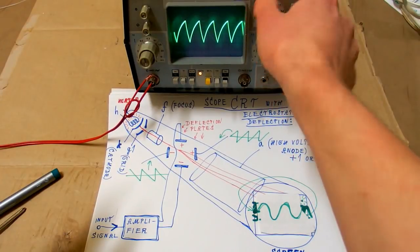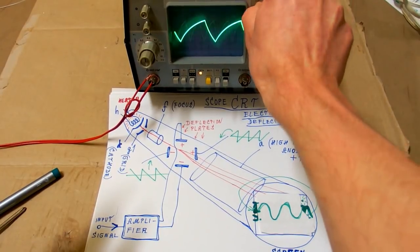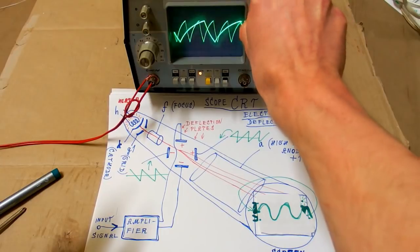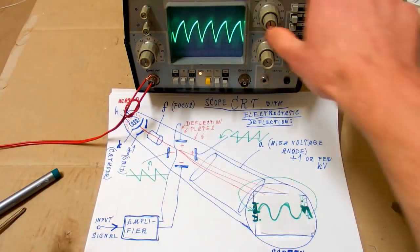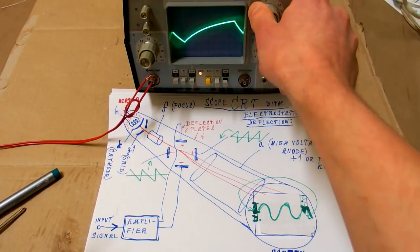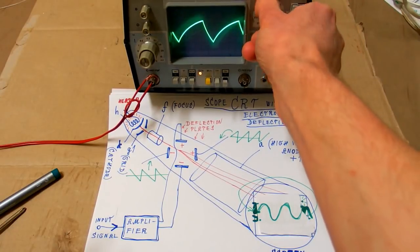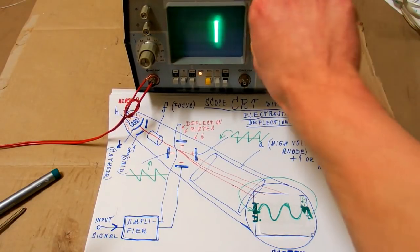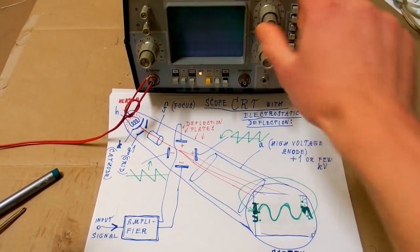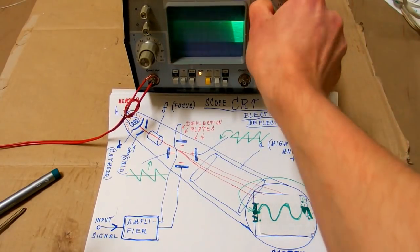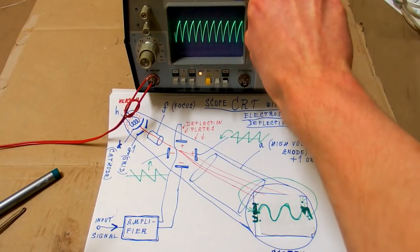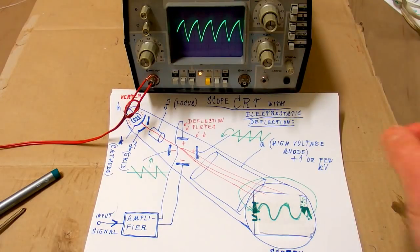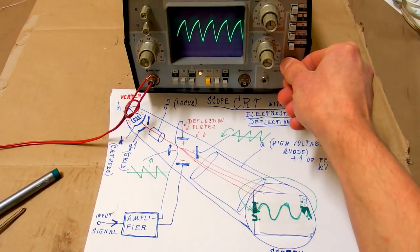And when you change the time base, you basically change the speed the beam goes from left to right. Now the beam goes faster. Now it goes slower. Now you can see it go very slow. And faster, faster. The sync level changes the point where it starts from.